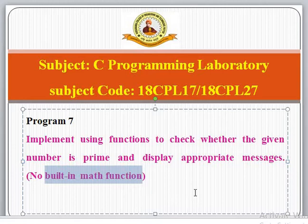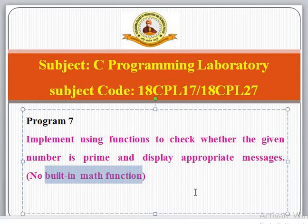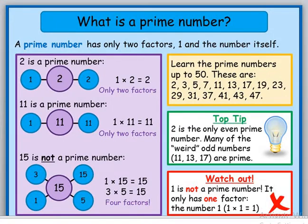The reason no built-in math function is used is to restrict the denominator values. When dividing to check if a number is prime, you can limit the upper bound using square root — for example, to check whether 9 is prime, you divide from 2 up to the square root of 9. But that approach is not possible here since we cannot use built-in math functions.